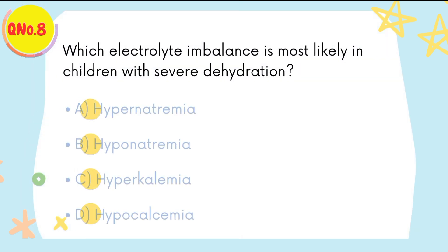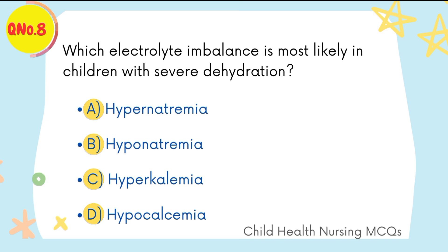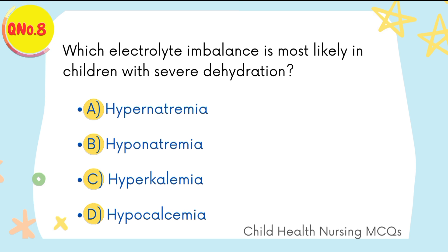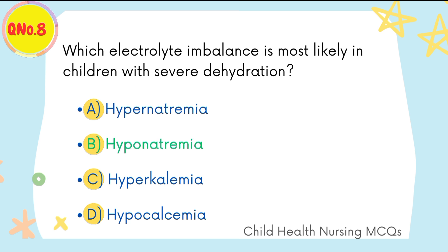Question number eight: which electrolyte imbalance is most likely in children with severe dehydration? B is the right option: hyponatremia.